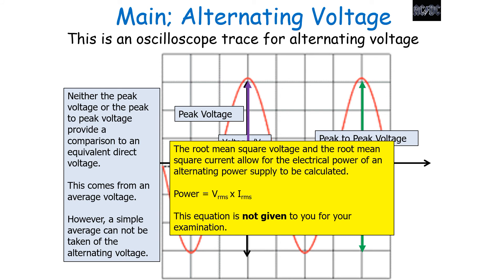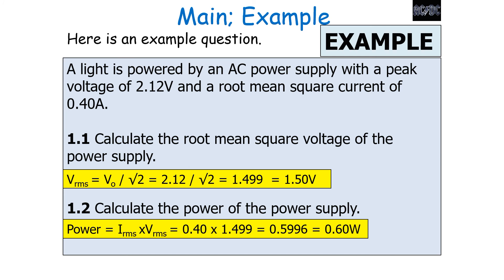Let's look at an example question. A light is powered by an AC power supply with a peak voltage of 2.12 volts and a root mean square current of 0.40 amps. First, calculate the root mean square voltage: V_rms = V₀ / √2 = 2.12 / √2 = 1.50 volts. Now calculate the power: P = I_rms × V_rms = 0.40 × 1.499 = 0.60 watts.